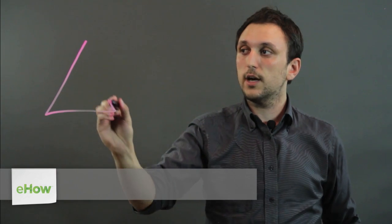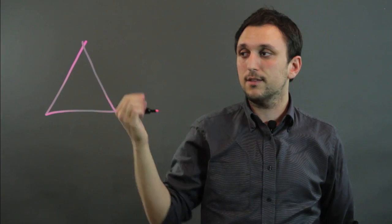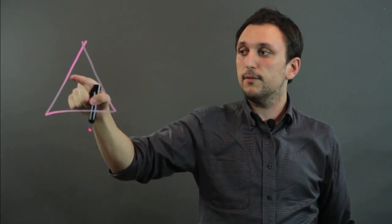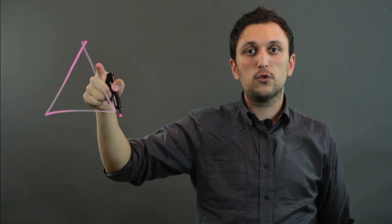Now a triangle is a three-sided polygon, meaning closed shape, with 180 degrees total inside. So what you have are three sides and three angles. The angles inside have to add up to 180 degrees.